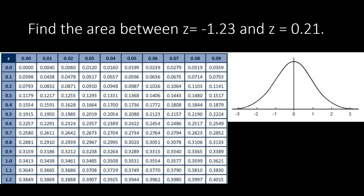If we wanted to plot this on our distribution, your area would look like this. Negative 1.23 is somewhere here — we do the estimation of the location of that point, then connect it to the curve. Then we locate 0.21, which is somewhere here, and connect that to the curve — and this is your area. Notice you have an area which is not connected to the center, the mean, or z equal to 0. Whenever you look at the z-table, the values there are areas coming from z equal to 0, from the center or mean.